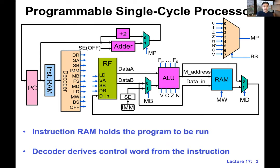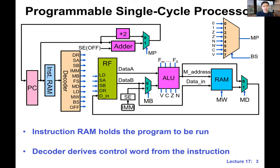Let's talk about some of the things we covered last time. Last week, we talked about this programmable single-cycle microprocessor. We actually started out from the ALU, and then gradually added useful pieces — we added the register file, data RAM, instruction RAM, the program counter PC, and the decoder. We also added support for branch instructions. When these different pieces come together, we have a functional single-cycle processor. All we need to do is load the right sequence of instructions into the instruction RAM, set the PC to the right address, and let it run.